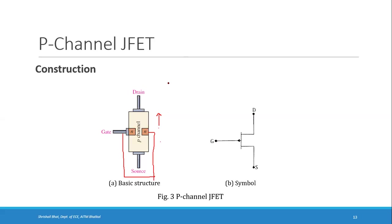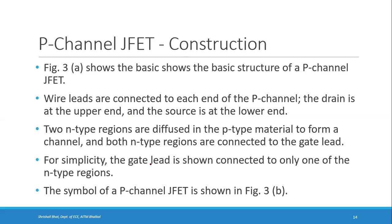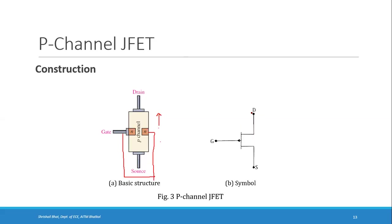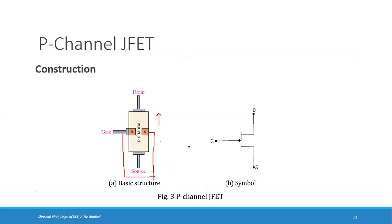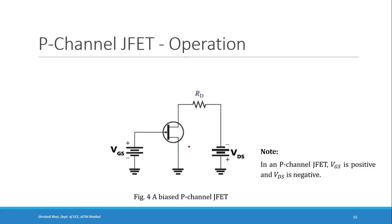JFET is always operated with its PN junction reverse biased. For this junction to be reverse biased in a P-channel JFET, the gate which is N-type must be connected to positive, and the P-type channel connected to negative. The basic structure shows wirelets connected to each end of the P-channel — drain at the upper end and source at the lower end — with two N-type regions diffused into the P-type channel, both connected to the gate.